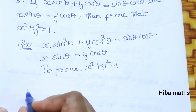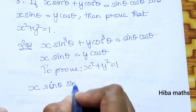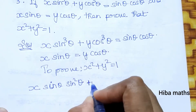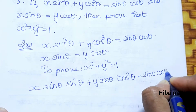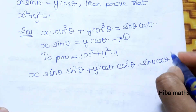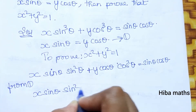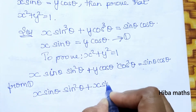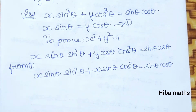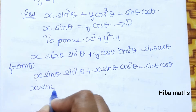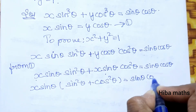First, from x sinθ = y cosθ, we work to show that x sin³θ relates to sinθ and that x sinθ = sin²θ = sinθ cosθ. We use the given condition x sinθ = y cosθ to substitute into the main equation.